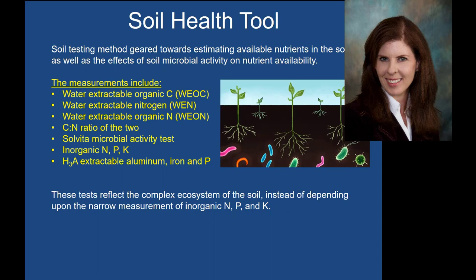The idea is that if you can predict what's going to be available, hopefully that will allow you to better manage the nutrients you're putting on the field and reduce the total amount going on. This test basically involves water-extractable organic carbon and nitrogen, or water-extractable inorganic nitrogen. It looks at the carbon-to-nitrogen ratio of the two, understanding that can have a big impact on soil microbial activity. It also uses a solvita microbial activity test, as well as inorganic N, P, and K, and a weak acid extraction of aluminum, iron, and phosphorus.